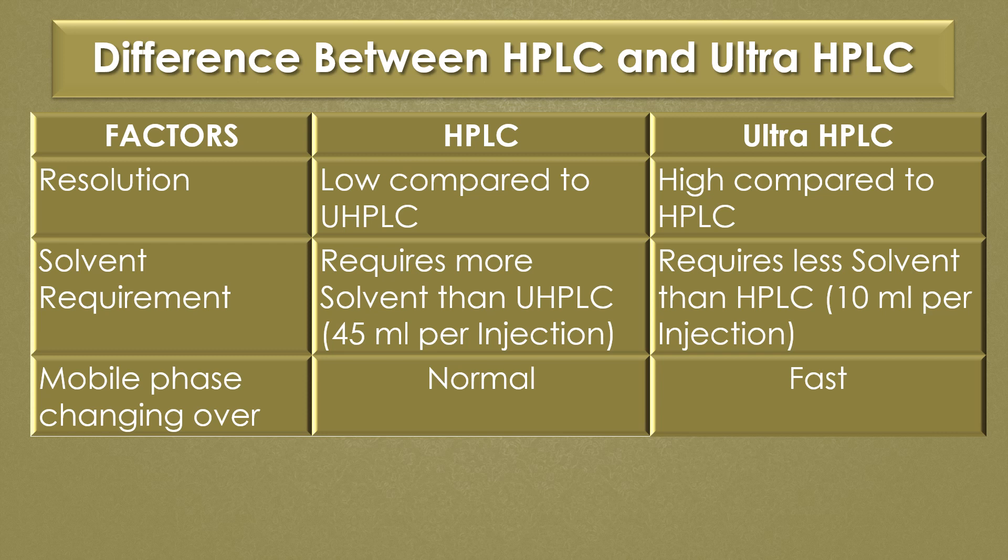HPLC requires more solvent than Ultra HPLC. The solvent requirement for HPLC is 45 ml per injection, while Ultra HPLC requires less solvent — only 10 ml per injection.